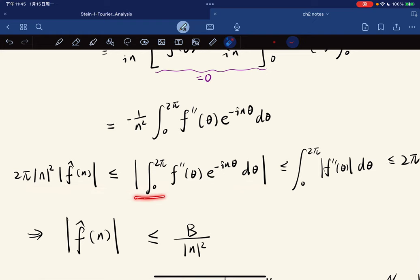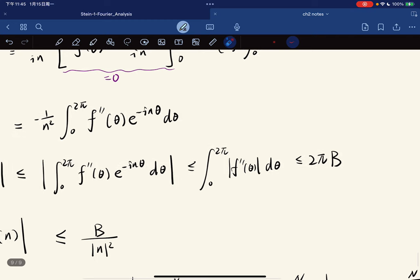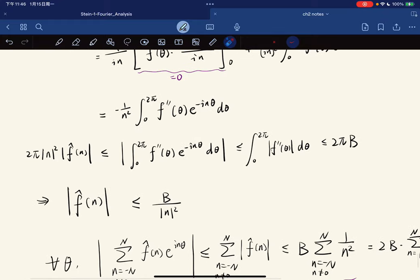And this is less than equal to this. And this is equal to 1. And this is less than 2π times B, where B is a bound of this. So cancel out, we have this.